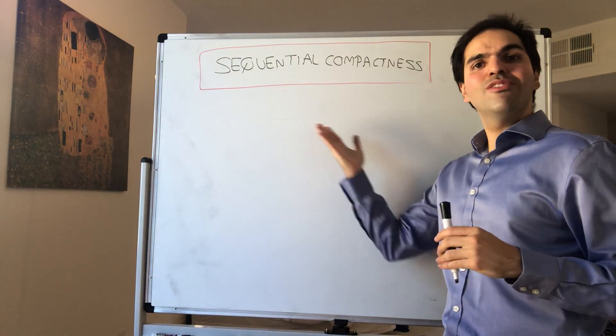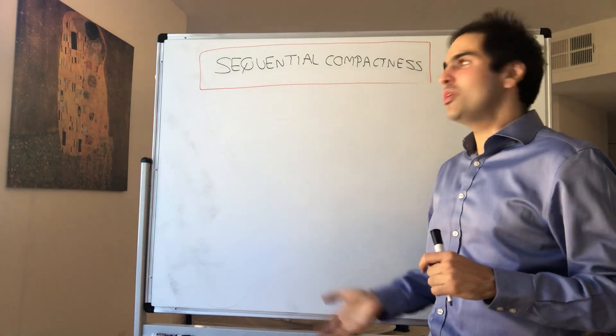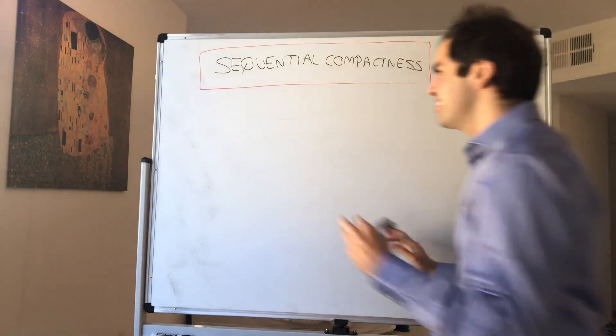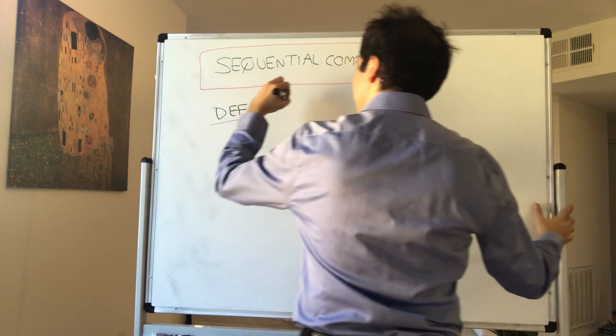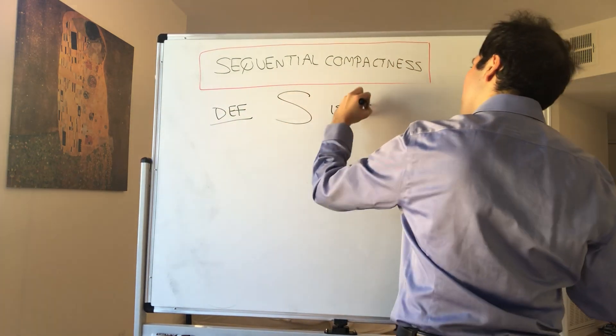All right, thanks for watching. Today I'm going to introduce you to the awesome notion of sequential compactness, which simply says the following. Suppose you have a metric space S, then S is sequentially compact.